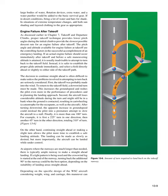The decision to continue straight ahead is often difficult unless the problems of attempting to turn back are seriously considered. First, the takeoff was probably made into the wind, so returning requires a downwind turn, which increases ground speed. Second, the aircraft loses considerable altitude during the turn and might still be in a bank when the ground is contacted, resulting in cartwheeling — a catastrophe for the occupants. After turning downwind, the apparent increase in ground speed could mislead the pilot into a premature attempt to slow the aircraft to a stall. Finally, returning to the runway is more than one 180-degree turn — it is first a 225-degree turn in one direction, then another 45-degree turn in the other direction, totaling 310 degrees of turn. On the other hand, continuing straight ahead or making a slight turn allows the pilot more time to establish a safe landing attitude, and the aircraft can be landed while under control.